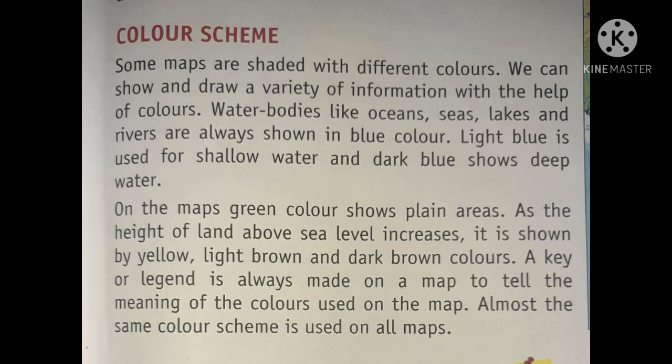Color scheme. Some maps are shaded with different colors. We can show and draw a variety of information with the help of colors. Water bodies like oceans, seas, lakes and rivers are always shown in blue color — light blue is used for shallow water and dark blue shows deep water. On maps, green color shows plain areas. As the height of land above sea level increases, it is shown by yellow, light brown and dark brown colors. A key or legend is always made on a map to tell the meaning of the colors used. Almost the same color scheme is used on all maps.